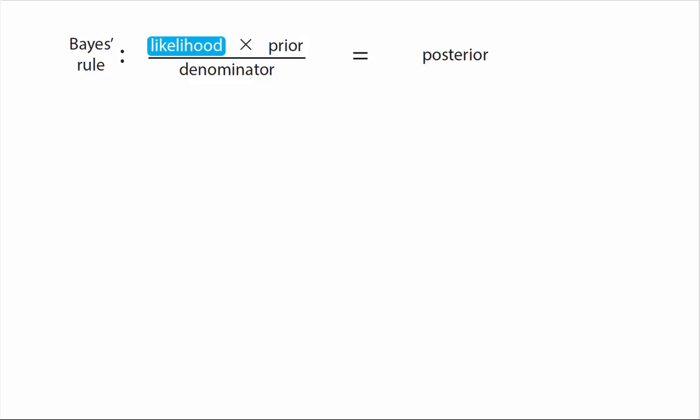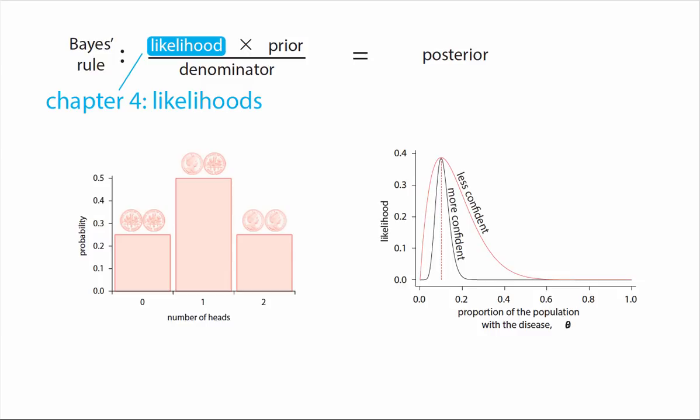I first start off in chapter four by looking at likelihoods. Here I discuss how we should go about choosing a given likelihood distribution, why a likelihood is different to a probability distribution in Bayesian inference, and the frequentist way of doing inference, which is the method of maximum likelihood.